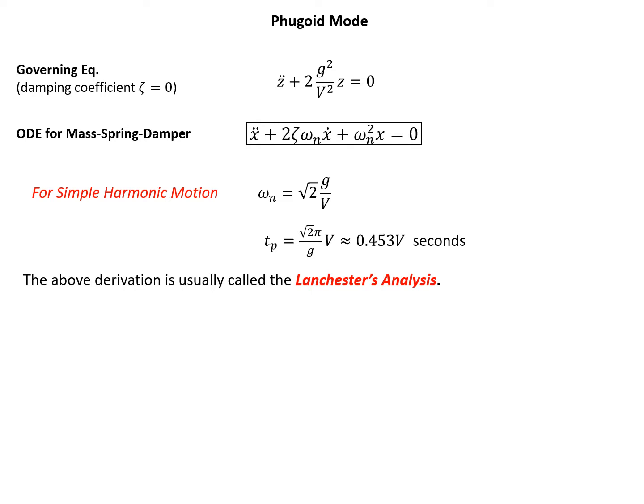This derivation is called the Lanchester analysis, named after Lanchester who first performed it. The approach is to write the ODE governing equation for the phugoid mode, then compare one-to-one with the mass-spring-damper ODE to find natural frequency and period time. However, because the damping coefficient is assumed to be zero from the start, the Lanchester analysis yields only the natural frequency and period time — no information about the damping ratio.